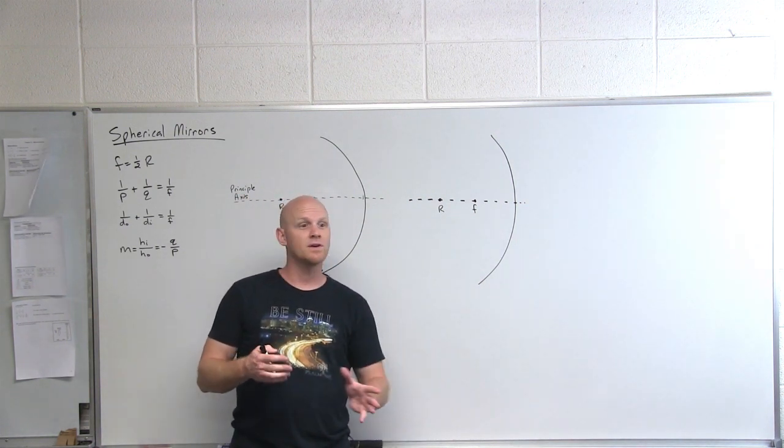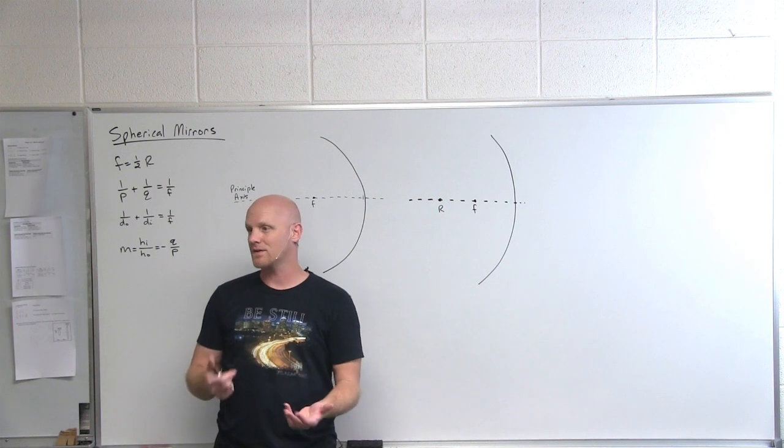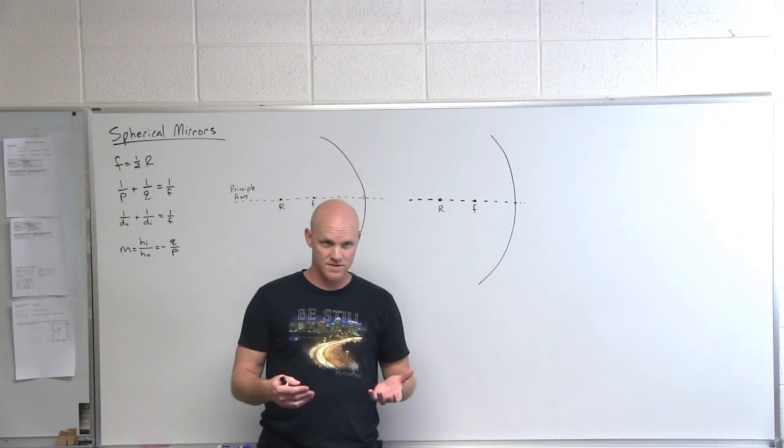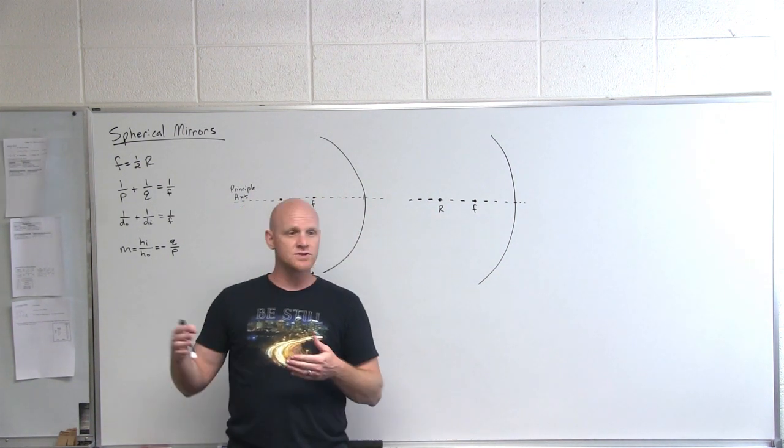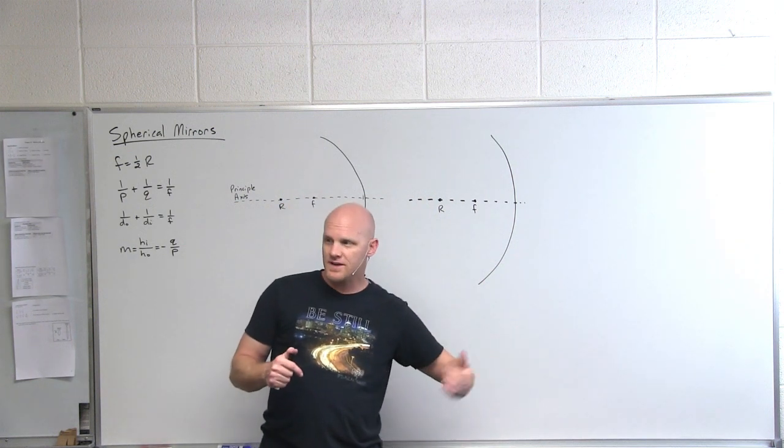We learned that they appear to have come from a common point behind the mirror. We said that was a virtual image and that the distance to the image was equal to the distance to the object.